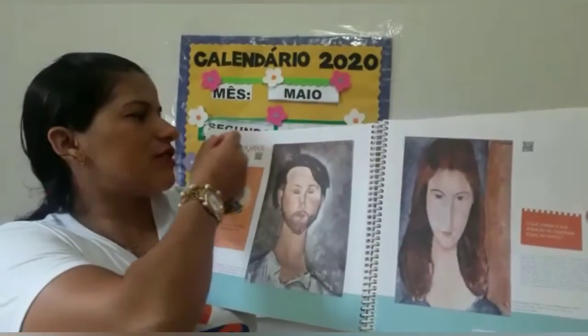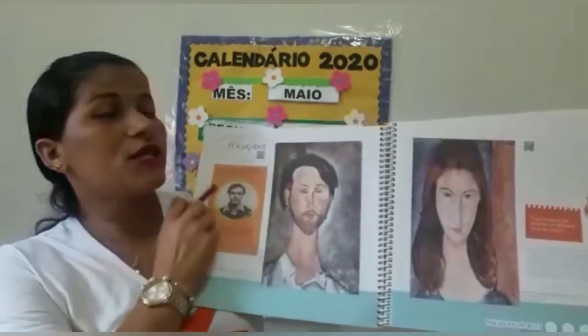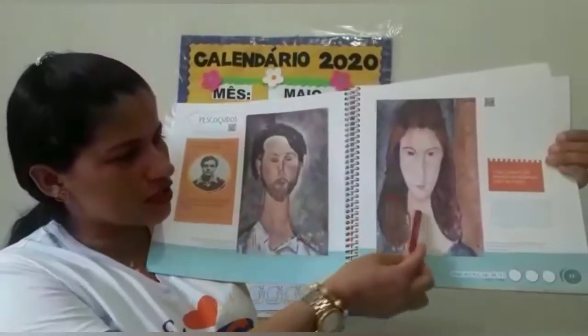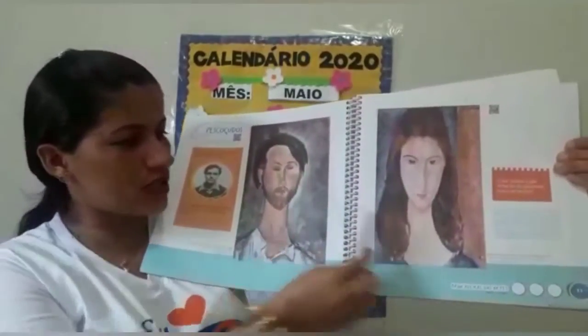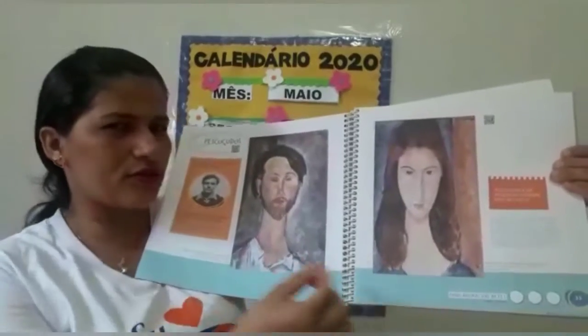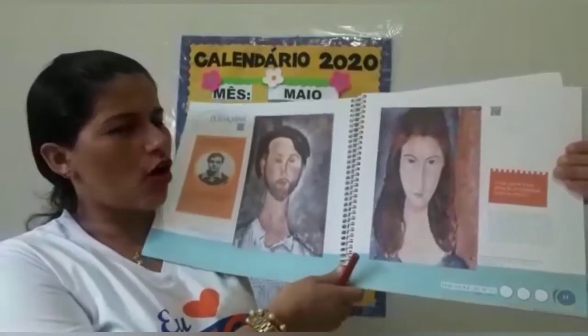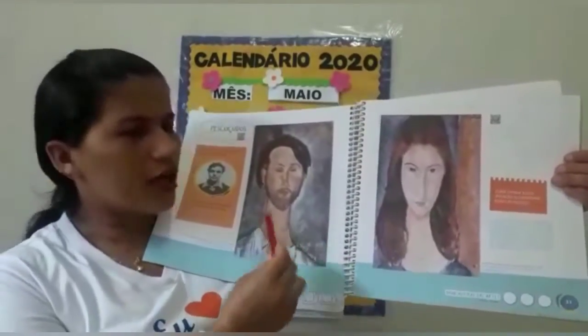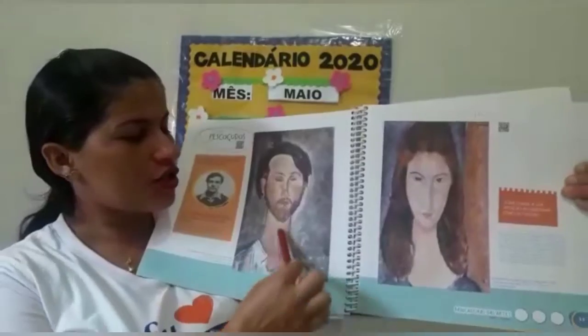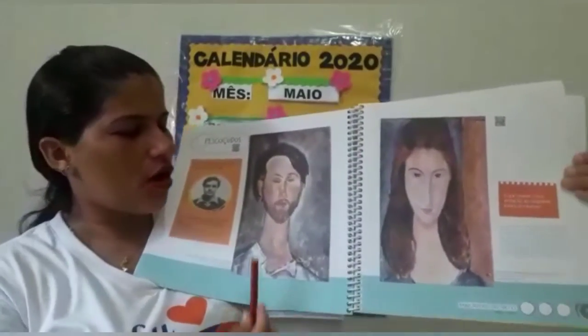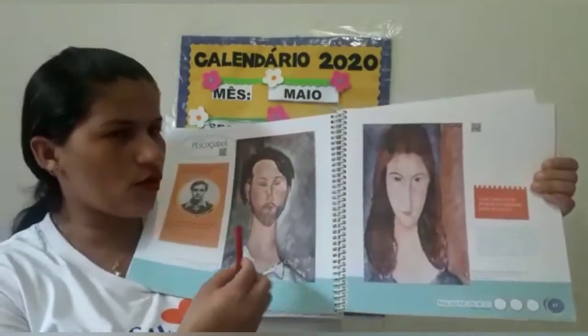Olha o título da nossa atividade: Pescoçudos! Quem observou que os pescoços dos dois retratos estão muito compridos? Acertou a característica da obra de Modigliani! Então, Modigliani usava essa técnica de alongar o rosto e os pescoços das suas personagens. Olha o pescoço do homem, o tamanho. Olha o rosto dele, como está comprido.